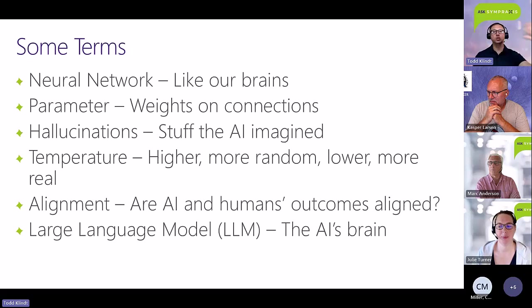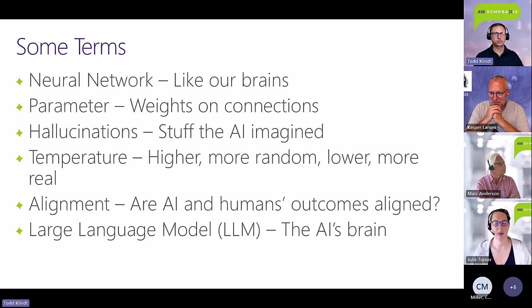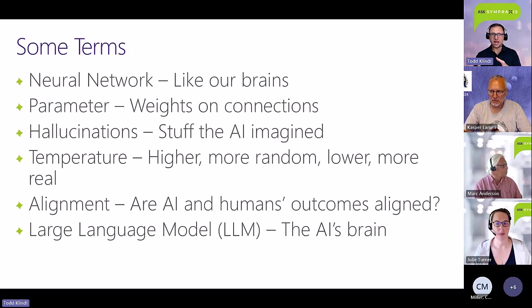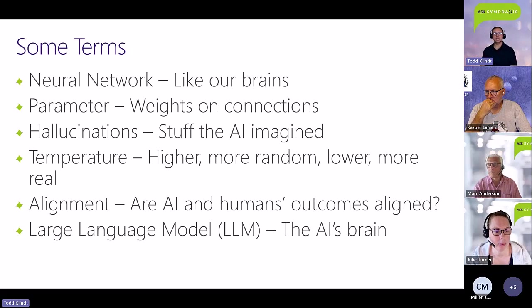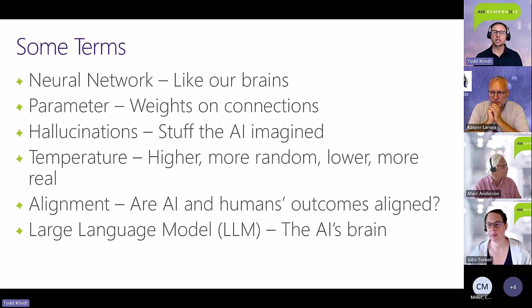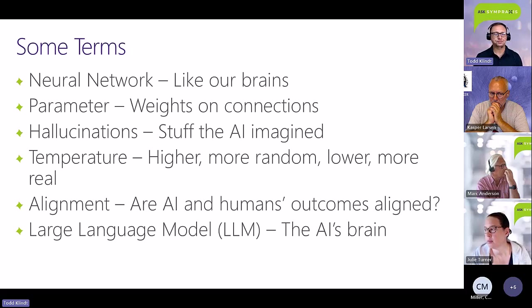Alignment is something you'll hear more about as AI grows. It's the idea of whether the AI's goals match yours. Like my wife and I — we communicate all the time but sometimes there's miscommunication, yet we're aligned and moving in the same direction. We don't fully know that about AI yet, and you can't easily bake it in because not everyone's goals and morals are the same. The last term is large language model, or LLM — that's the big neural net you interact with in GPT-type AIs.